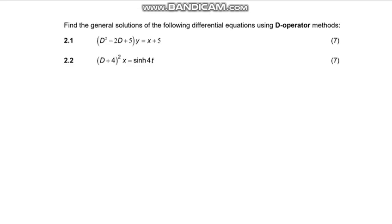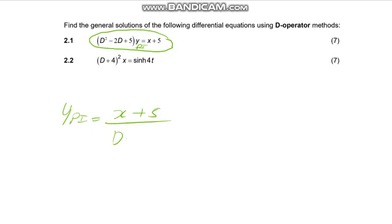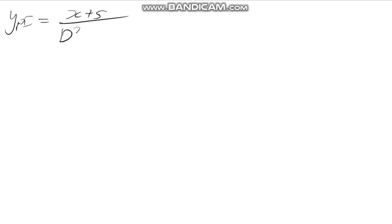Now you're going to have to solve the Y_PI. You go to the original equation to find it. Y_PI equals X plus 5 over D squared minus 2D plus 5. So Y_PI equals X plus 5 divided by D squared minus 2D plus 5.